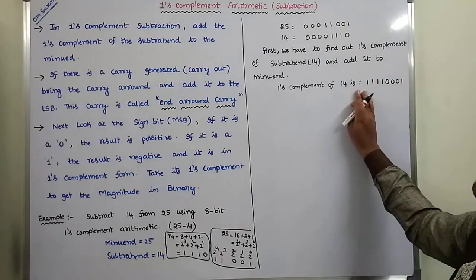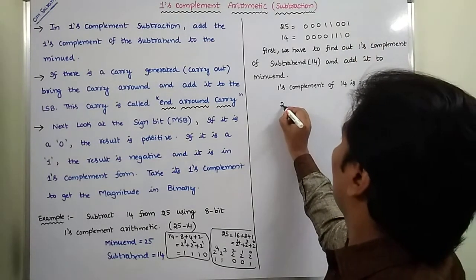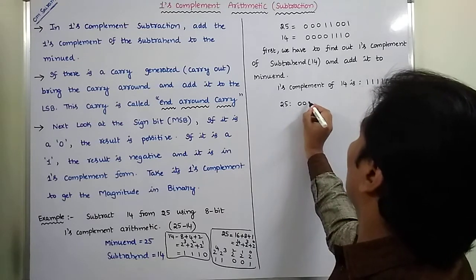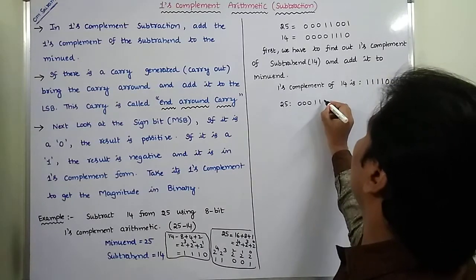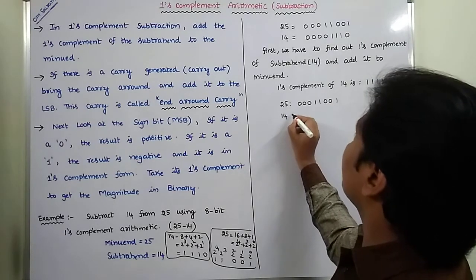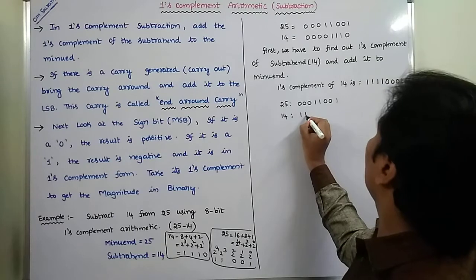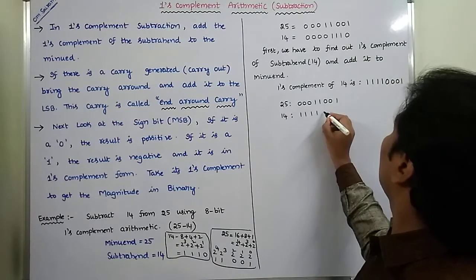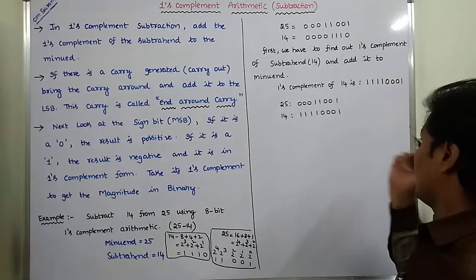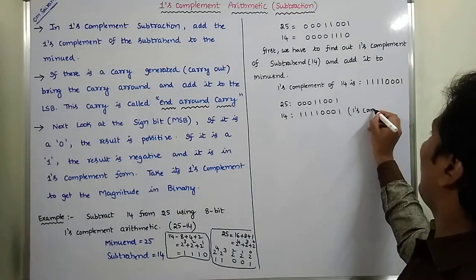Now, this One's Complement of 14 is added to the Minuend 25. So 25 is: 0, 0, 0, 1, 1, 0, 0, 1 and One's Complement of 14 is: 1, 1, 1, 1, 0, 0, 0, 1. Adding these: 1 plus 1 gives 0 with carry 1; 0 plus 0 plus 1 gives 1; 0 plus 0 gives 0; 1 plus 0 gives 1; 1 plus 1 gives 0 with carry 1; next 1 plus 1 gives 0 with carry 1; 1 plus 1 gives 0 with carry 1; 1 plus 1 gives 0 with carry 1.